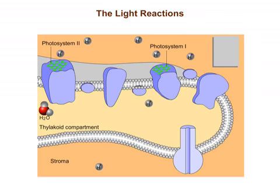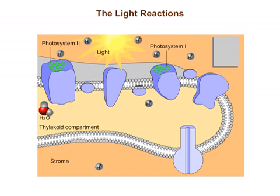The photosystems consist of arrays of chlorophyll molecules. Chlorophyll, the green pigment of leaves, absorbs light energy. The absorbed energy excites electrons to a higher energy level.